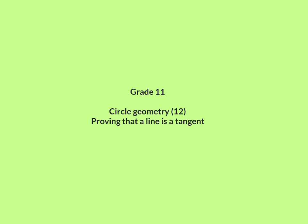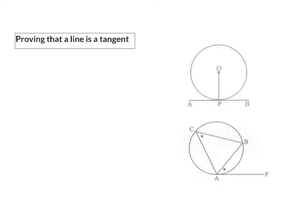Today, we are going to have a look at how to prove that a line is a tangent to the circle. I'm going to remind you firstly that a tangent is a line that only touches the circle once, instead of cutting through the circle twice.